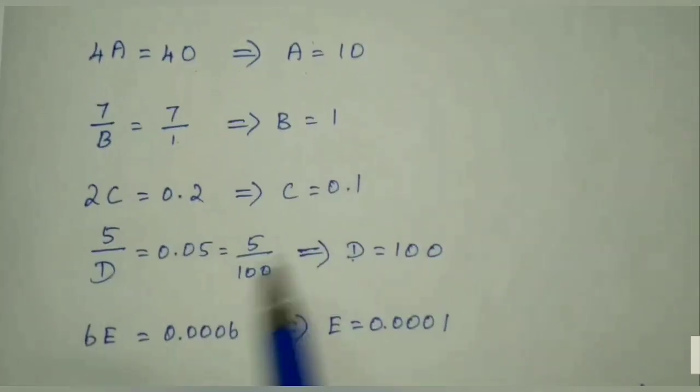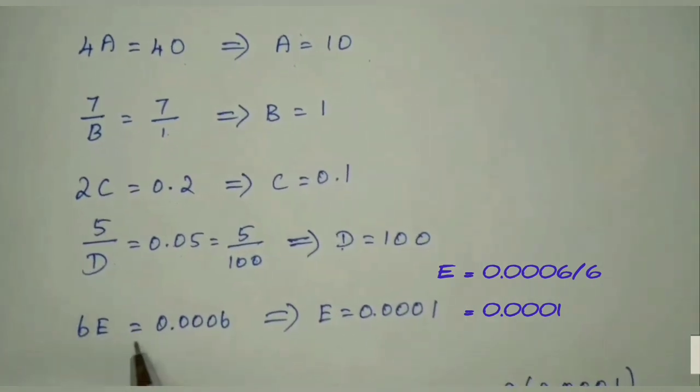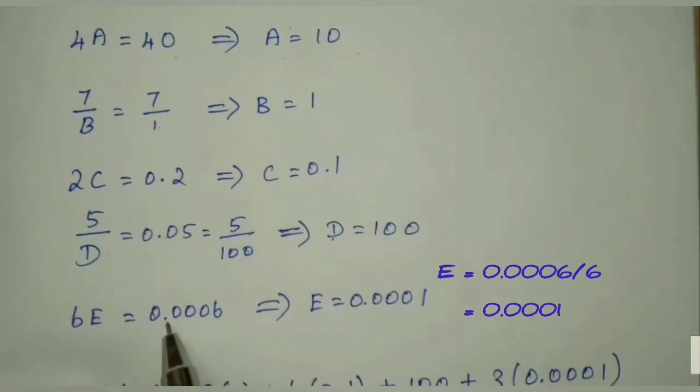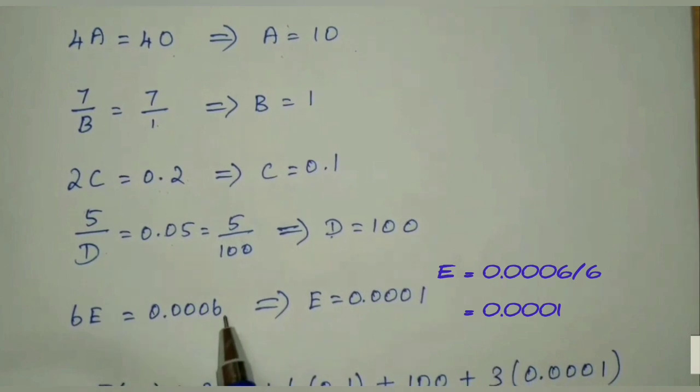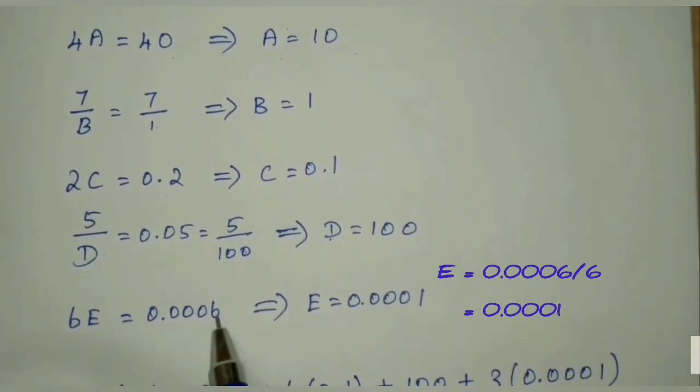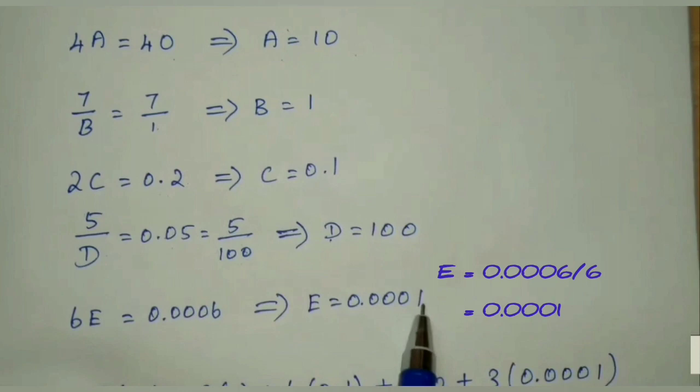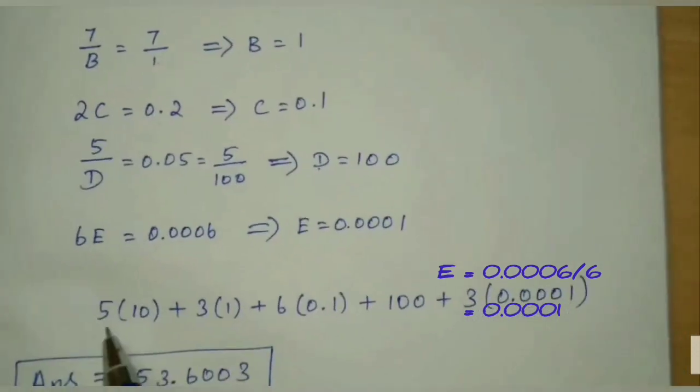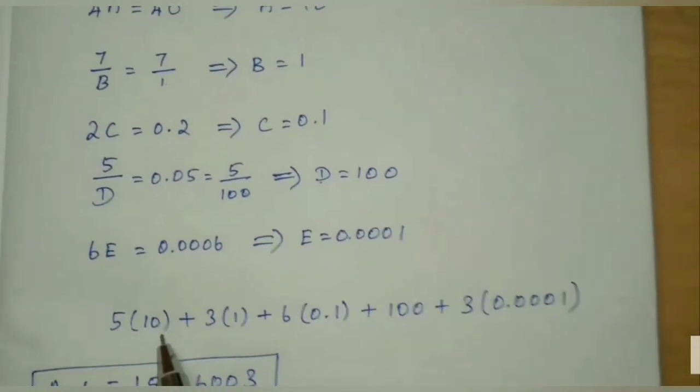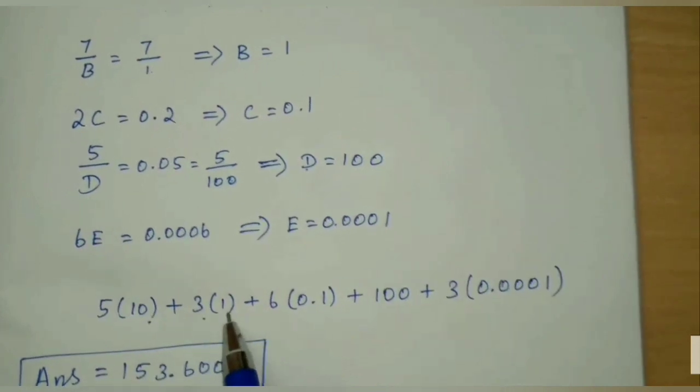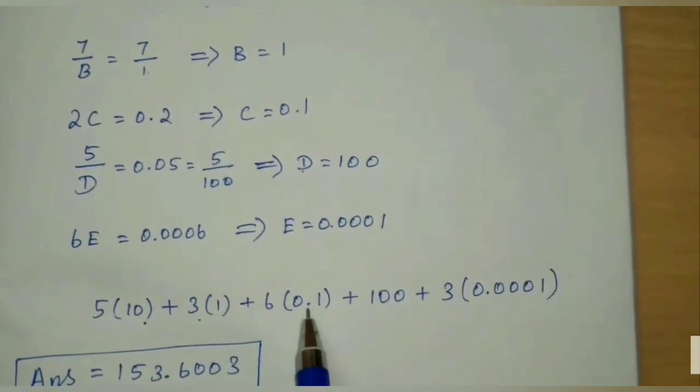Then 6E equals 0.0006. E value equals 0.0006 divided by 6. So answer is 0.0001. So I substitute all the values A, B, C, D, E.